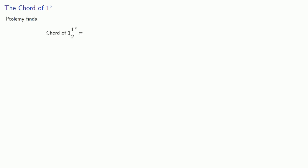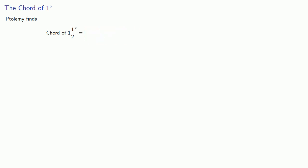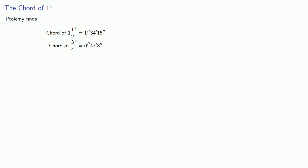Now Ptolemy finds the chord of 1 degree. Remember, the smallest whole-degree chord that we can find is the chord of 3 degrees. But we can also take half of that, so we can find the chord of 1 and a half degrees — at least we could find it in principle. Ptolemy actually found it: 1, 34, 15. And also the chord of 3 quarters of a degree — that one isn't so bad if you're starting with the chord of 1 and a half degrees — giving 0, 47, 8.